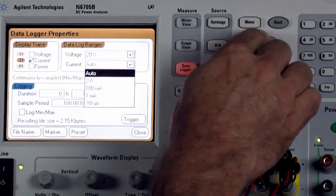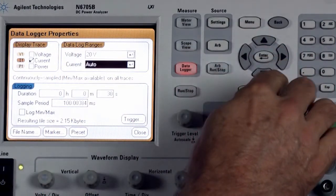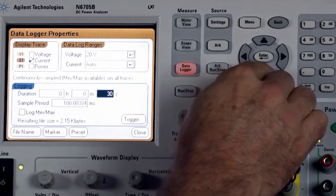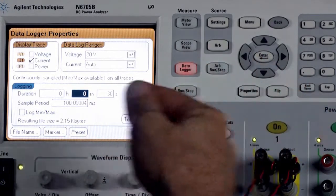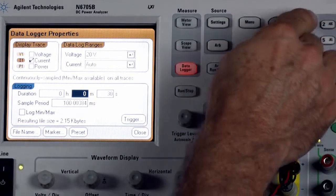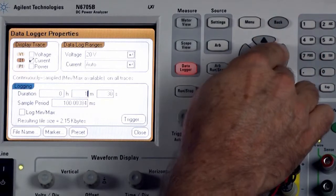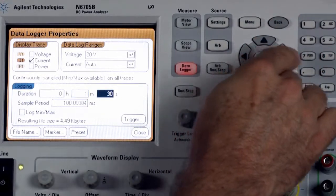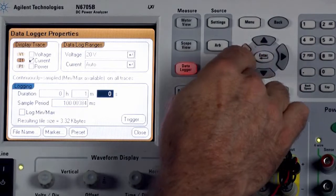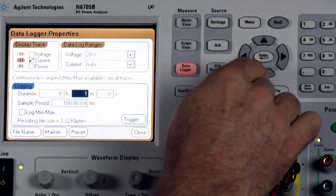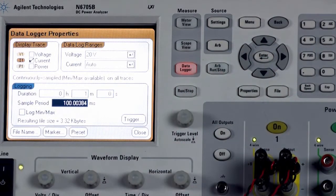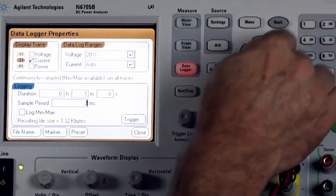So we'll select auto and then we need to go down and further decide how long do we want to log data. I'm just going to choose one minute and then come down to our sample period. Instead of doing it every 100 milliseconds, I'd like a faster sampling so I'm going to put in 0.2 milliseconds.